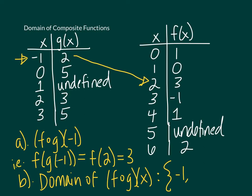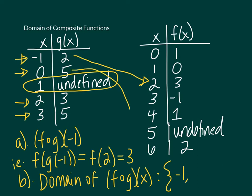Now we're going to look back at our inside function g. One of the first things you can do is look at what is not in the domain of g. Notice that 1 is not in the domain of g, so there's no way it can be in the domain of the composite function. You're going to start with the domain of your inside function. Then we look at the remaining values in the domain: 0, 2, and 3. Starting with 0 — it is in the domain of g and is paired with 5, but when we try to input 5 into function f, it's undefined. So 0 is not in the domain of the composite function.